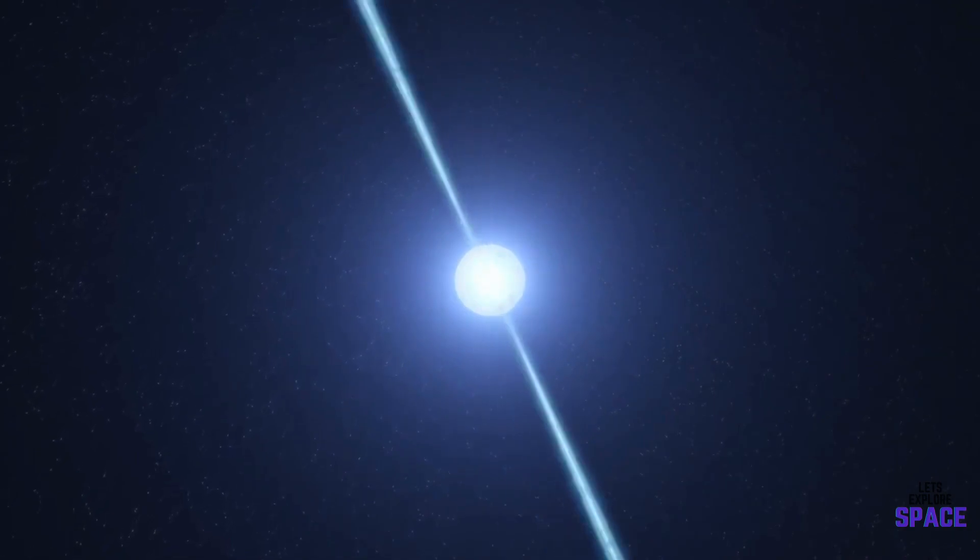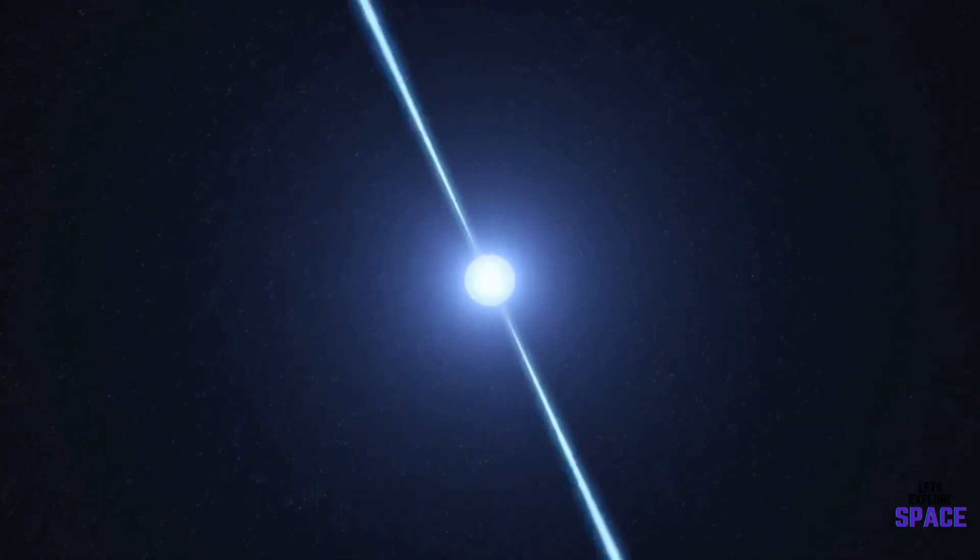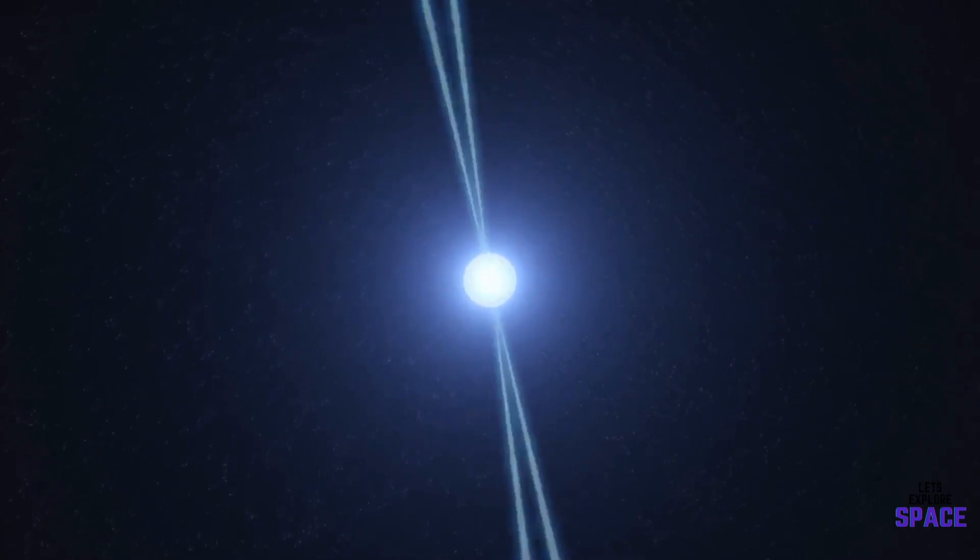Keep in mind, the average diameter of a neutron star is roughly 12.4 miles. So yeah, that's pretty fast.